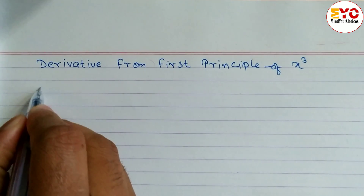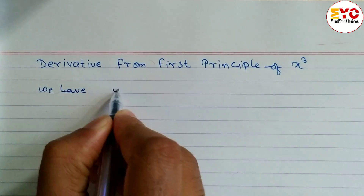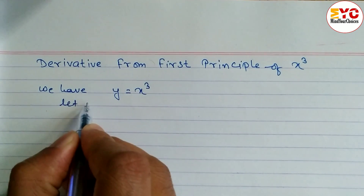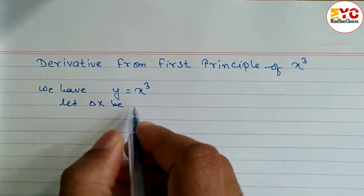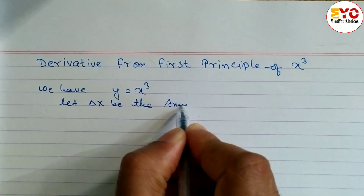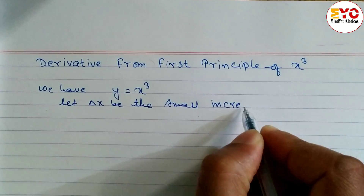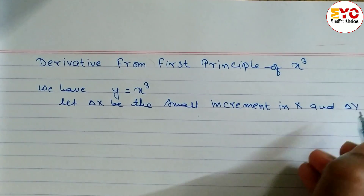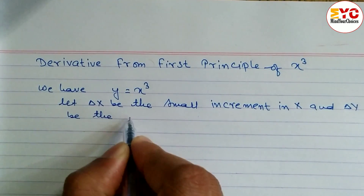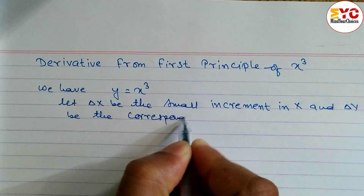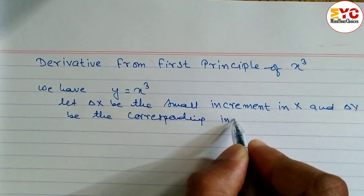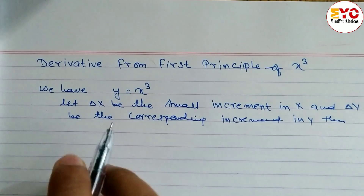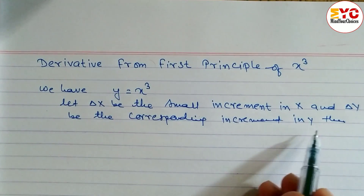First of all, we let y is equal to x power 3. Always we have to let. After that, let del x be the small increment in x, and del y be the corresponding increment in y.